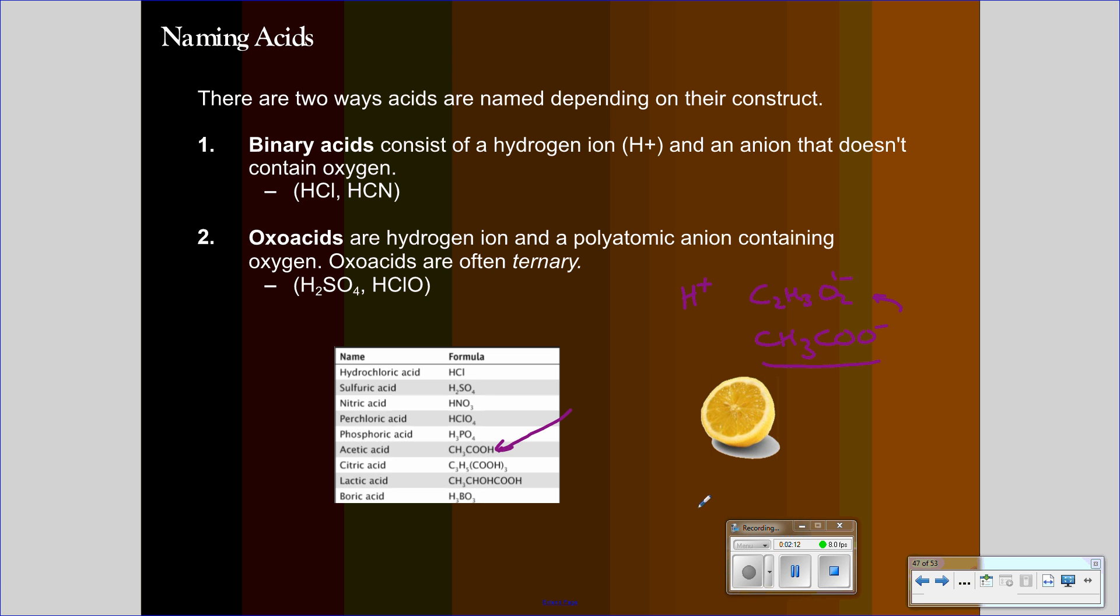There are many, many more acids than this. These are just some basics. What we should see, though, is that these are all oxoacids, where this is a binary acid.